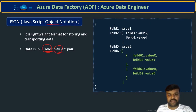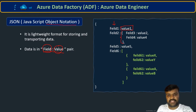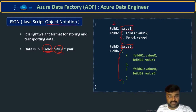For example, here you can see Field 1, Field 2, Field 5, Field 6 — these are the fields with their corresponding values. Field 1's corresponding value is this one, Field 2's corresponding value is this whole thing, and then Field 5 and Field 6 have their corresponding values. But the structure is a little different for some of those fields.